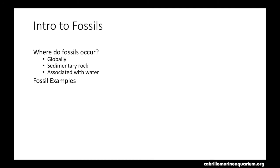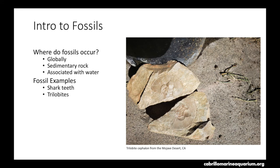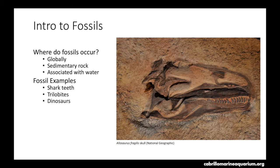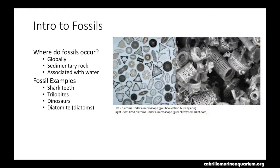Let's now look at a couple of fossil examples. First off, some fossilized shark teeth from Cabrillo Marine Aquarium. Next is a trilobite cephalon from the Mojave Desert — the upper part is the actual fossilized exoskeleton of the trilobite head, and the bottom half is the imprint left behind. There are of course dinosaur fossils, like this Allosaurus skull. We can even have microfossils: here is an exposure of diatomite on Santa Cruz Island within the Channel Islands off the coast of California — millions and millions of diatoms that have been fossilized and turned into rock. Some of you may have heard this called diatomaceous earth — diatomite is diatomaceous earth.